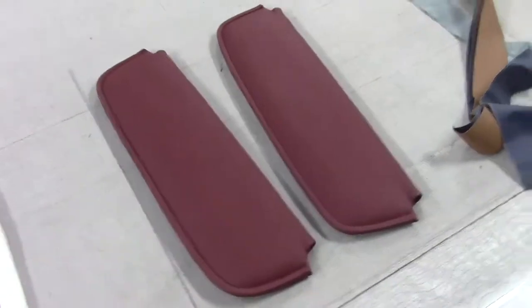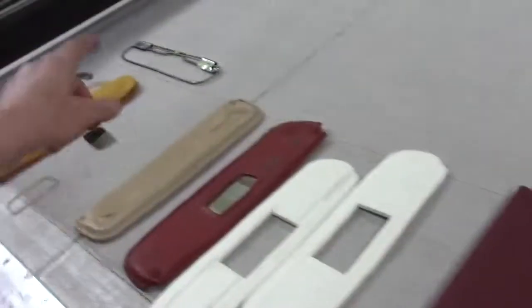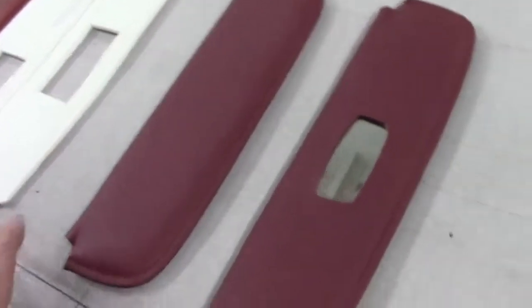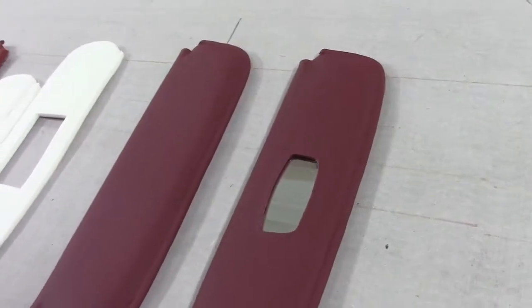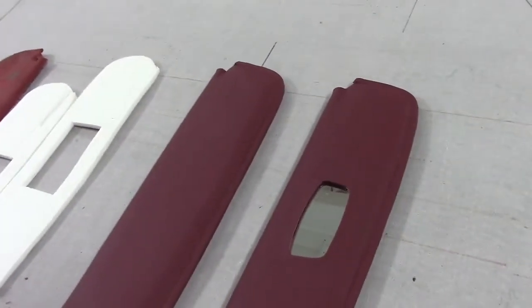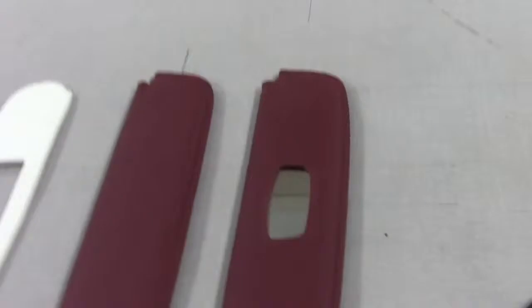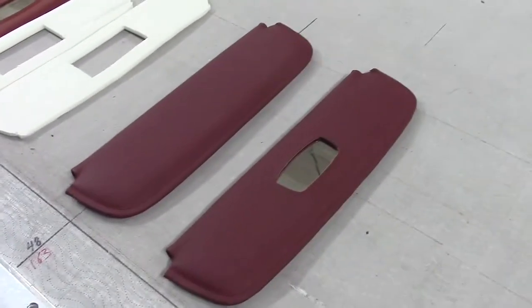So there we have it guys. That's our offerings for the 190SL sun visors. So all we need from you is your original frame. And we ask that you don't send the chrome components. We don't need those. We just need that frame and we can reproduce these from that point. And soon we're going to be offering the frames so we can sell them outright.